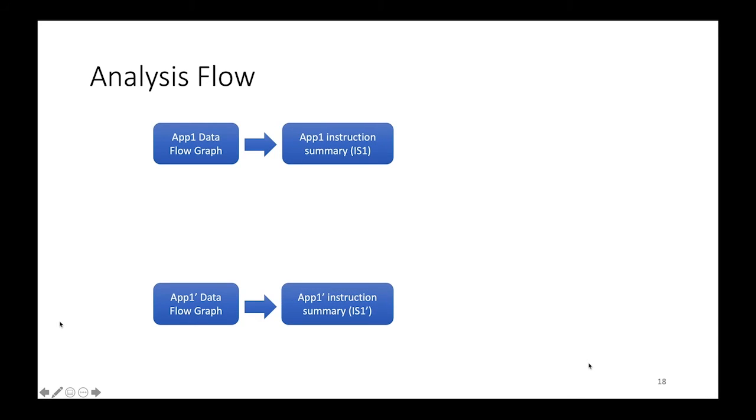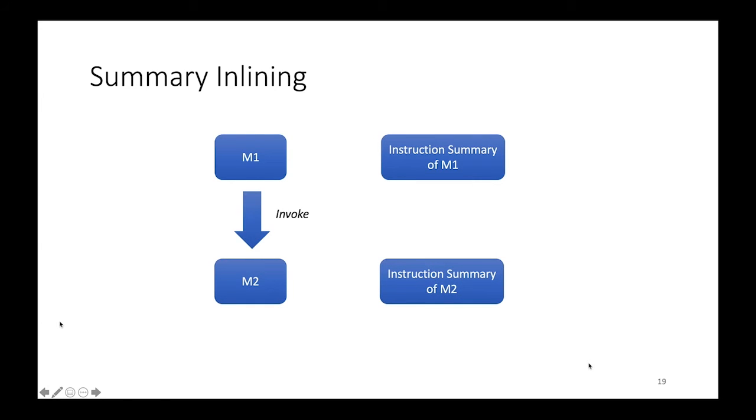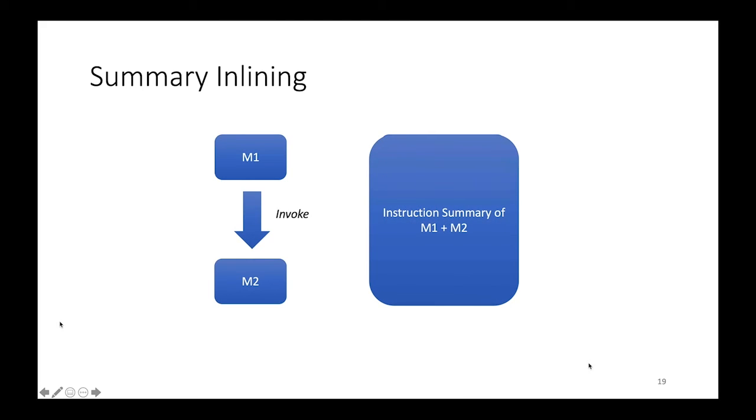So here's a basic analysis flow. So we have data flow graph of the two apps, right? App1 and App1 prime is the one that has been repackaged. Based on that information, we generate what we call the instruction summary. So we have IS1 for the App1 and IS1 prime for the repackaged App1. We then compare the IS1 versus IS1 prime just to see the similarity. And then we determine whether they are equivalent methods. If we were to look at inlining, one other thing that happened here is that we have method M1, so we produce the instruction summary of M1. And then when M1 invoke M2, we also look at instruction summary of M2. And if the method has been inline, we look to see if the instruction summary of M1 and M2 are indeed combined.